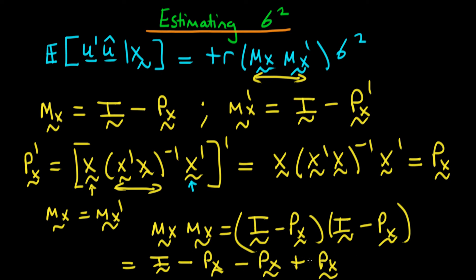You can see that this last term cancels with one of the other terms, and we're just left with i minus px. In other words, mx times mx primed is just mx. So this expression at the top here just becomes the trace of mx all times sigma squared. And I promise in the next video we're going to finish our derivation of sigma hat squared.